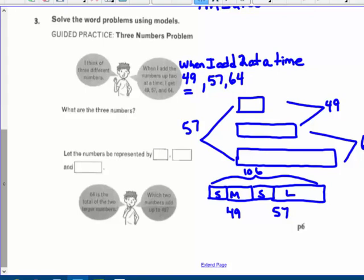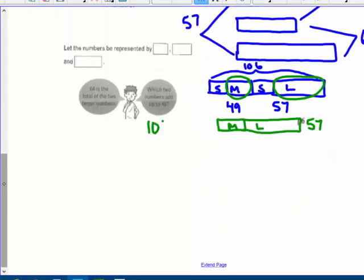Well, I know that the medium and the large, so the medium added with the large, if I add that, that's got to be medium and large. That's 57. So if I take my 106 minus my 57, right? My 106 minus my 57. Oh, wait. Medium plus large is 64. I said that wrong. So if I take my 106, and I minus my 64, I get 42, which represents two smalls here.